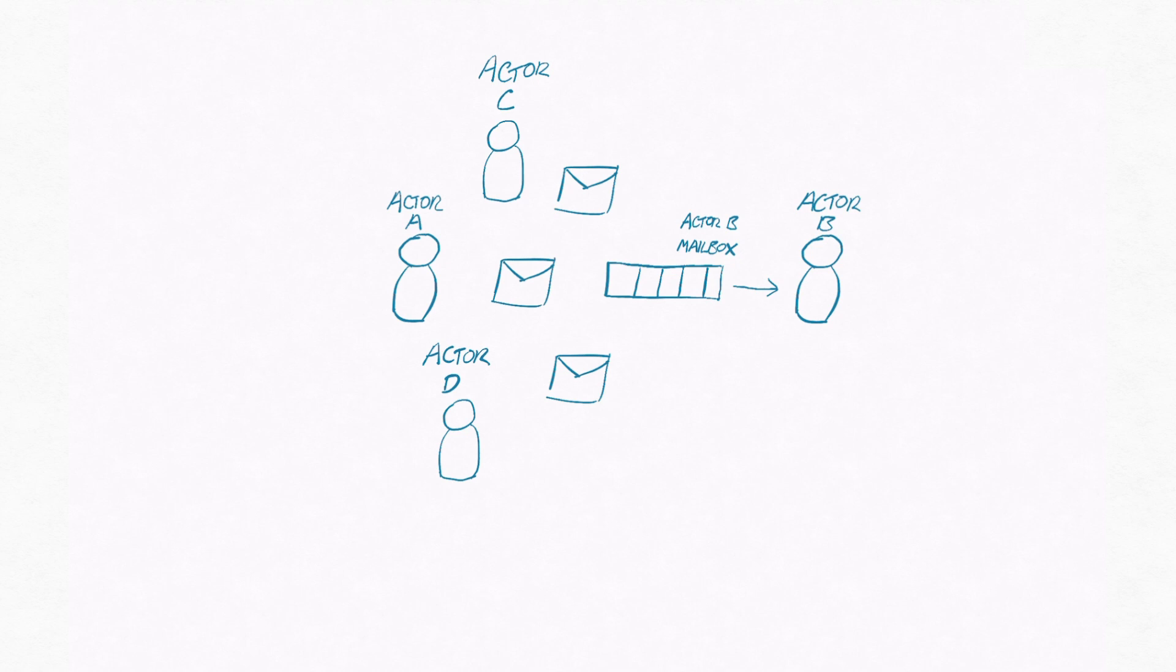Akka handles the facilitation of interactions between all actors by assigning them each a mailbox. When you send a message to an actor, you're actually sending that message to its mailbox, which is an ordered queue that the actor consumes from.